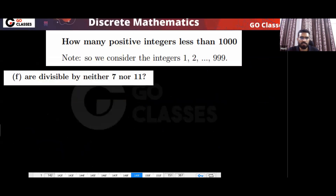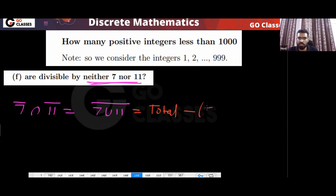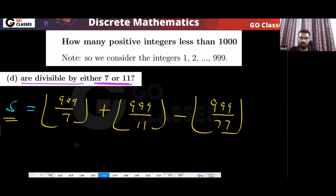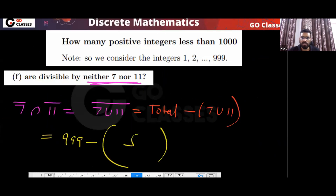Next: neither 7 nor 11. That equals the complement of (7 or 11), which is total minus |7 or 11|. So the answer is 999 minus S.